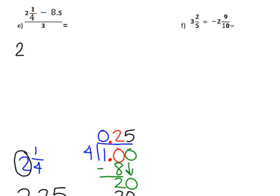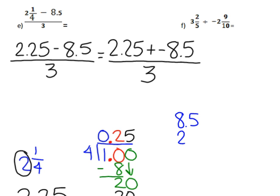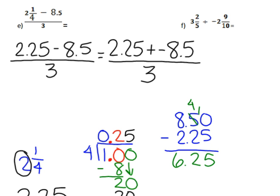So the problem becomes 2 and 25 hundredths minus 8 and 5 tenths, all divided by 3. We simplify the numerator first by changing it to 2 and 25 hundredths plus negative 8 and 5 tenths. These have different signs, so I subtract them, putting 8 and 5 tenths on top and lining up the decimal point, filling in a zero so everything lines up neatly. Borrowing, that comes out to 6 and 25 hundredths, and since there was more negative, it's negative 6 and 25 hundredths.